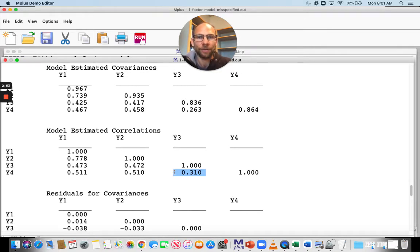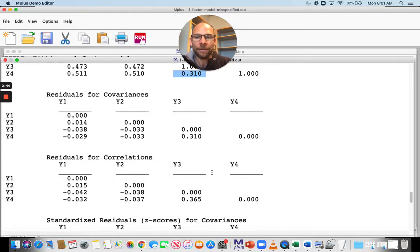The data had a correlation of almost 0.7. The model implied correlation is only 0.3. So the model underestimates this correlation and as a result, in the residuals for correlations, you see that there's a big residual association, 0.365, that the model does not explain.